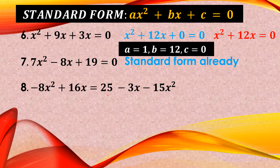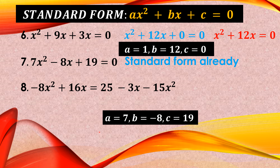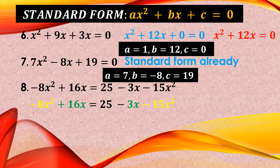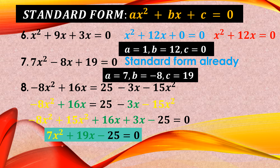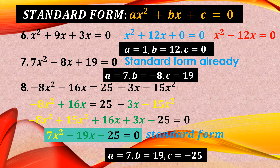Number 8: We transpose all terms to the left. Gathering similar terms, 16X and 3X are linear terms, and we have minus 25. The negative 3X becomes positive 3X, and negative 15X squared becomes positive 15X squared. Combining: negative 8X squared plus 15X squared gives 7X squared, and 16X plus 3X gives 19X minus 25. The standard form is 7X squared plus 19X minus 25 equals 0, where A is 7, B is 19, and C is negative 25.